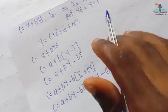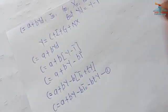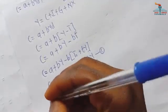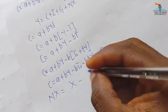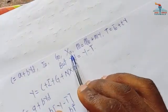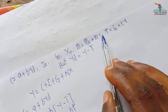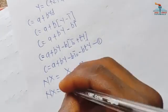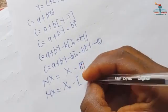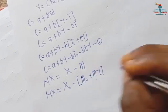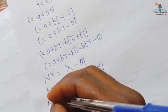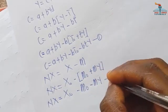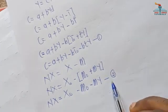Now let us solve for net export. Net export NX equals exports minus imports. Export equals X0 and import equals M0 plus mY. Substituting, net export equals X0 minus (M0 plus mY). Expanding the bracket gives NX equals X0 minus M0 minus mY.